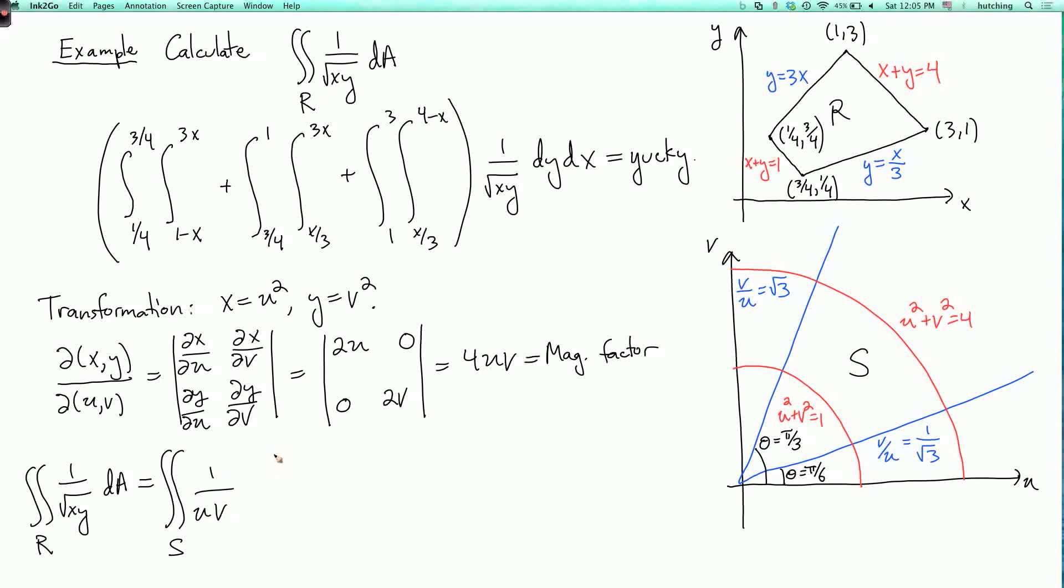Now I have to multiply by the magnification factor, which is 4uv, and then dA. So I have the double integral over s of 4, because the u and v cancel.